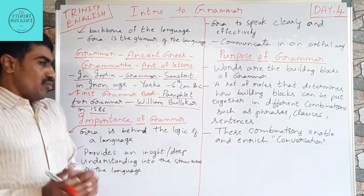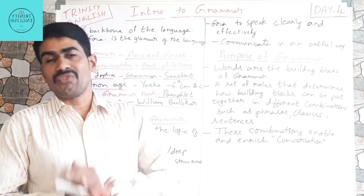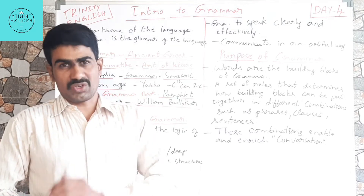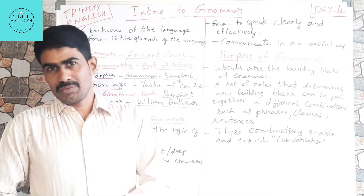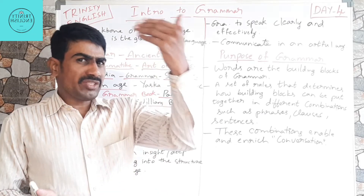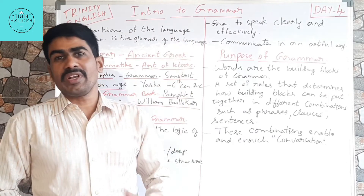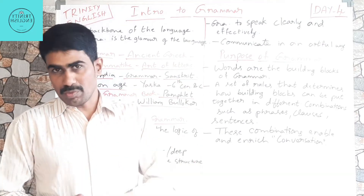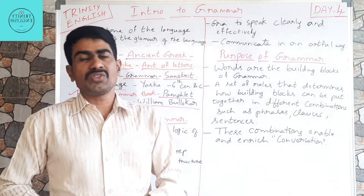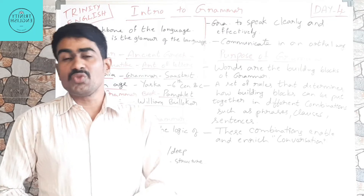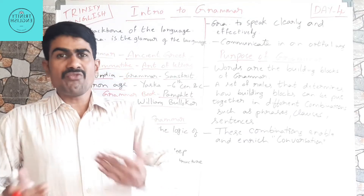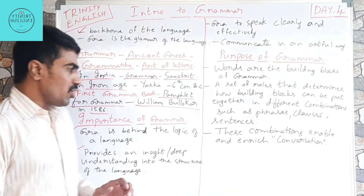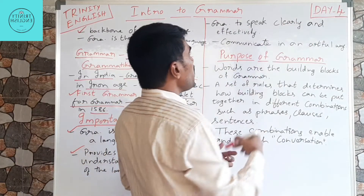Grammar helps us understand the structure of the language. For example, Subject-Verb-Object is a structure — 'I teach English' is a structure. Based on this structure, we can make a number of sentences. There are so many structures in the language that we can construct sentences very easily. Without knowing grammar, we struggle because we do not know the structures.